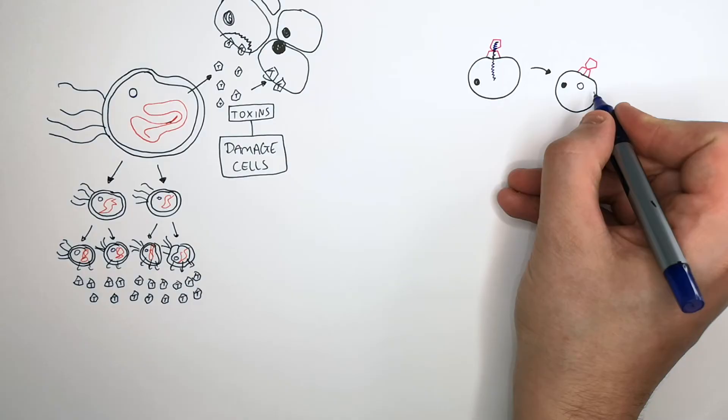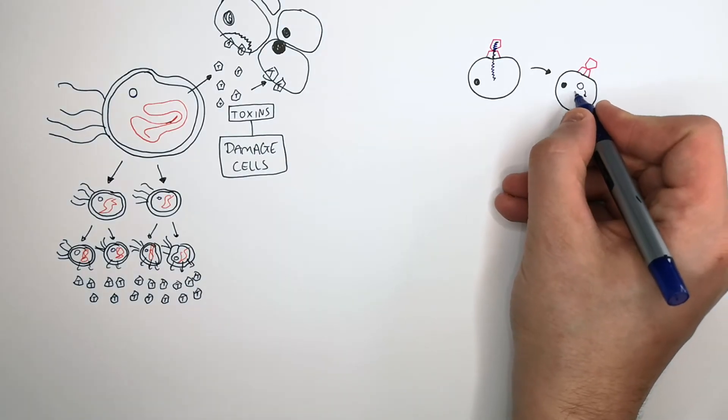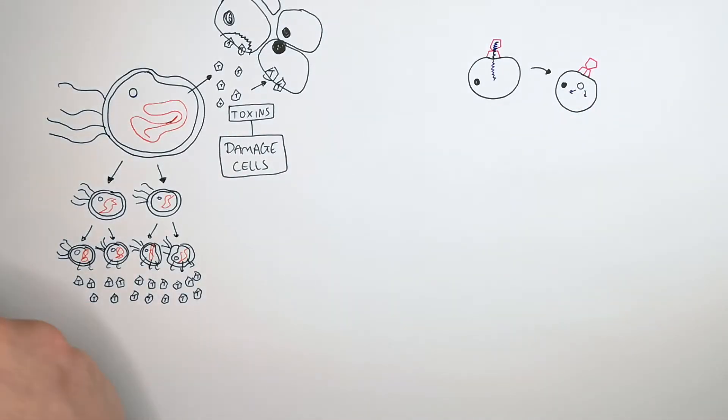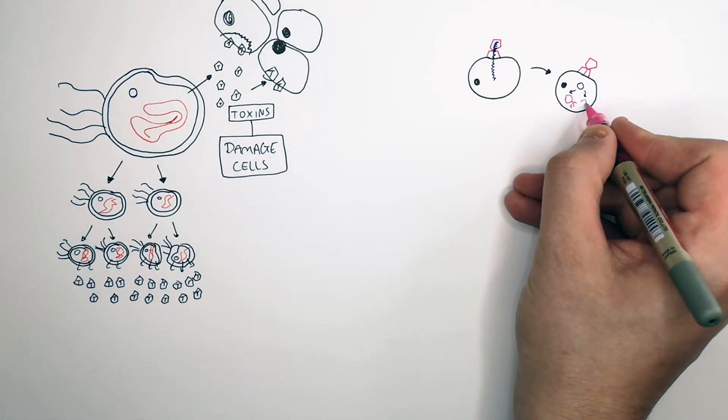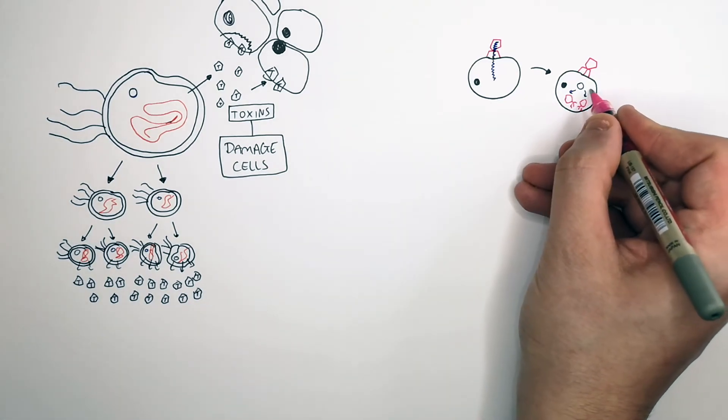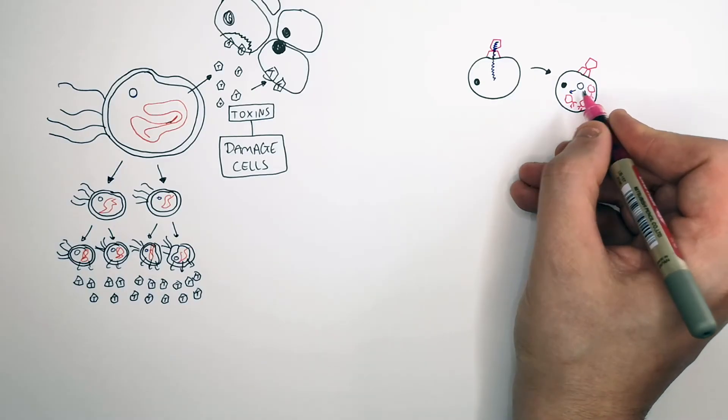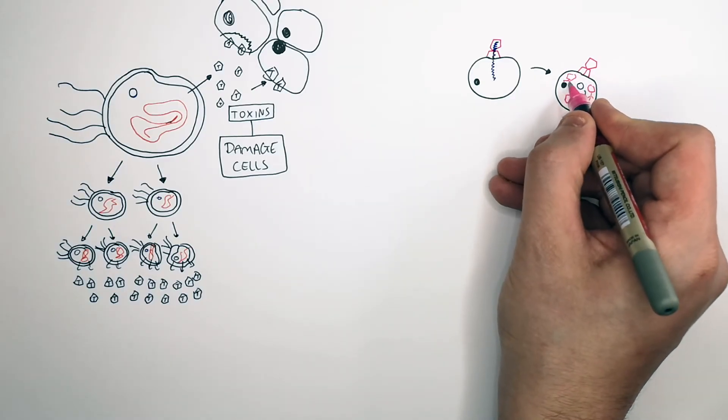And now inside your cell, this genetic material from the virus is going to be used to form other viruses. So the genetic material that was injected by the virus is going to be used to create other viruses inside your cell.